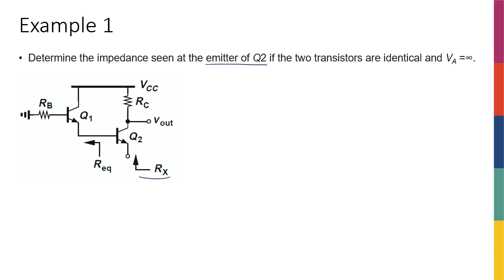So this Rx that we have here, if the two transistors are identical, meaning beta 1 and beta 2 are the same, and the early effect doesn't exist, or early voltage is infinity.